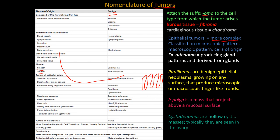You can have a bronchial adenoma from respiratory passages, a renal tubular adenoma from renal epithelium, a liver cell adenoma from liver cells, a urethral papilloma from the urinary tract, a hydatidiform mole from placental epithelium, and a nevus from tumors of melanocytes. There are also some mixed tumors we will talk about in a few slides.